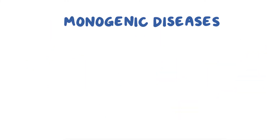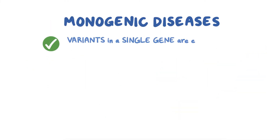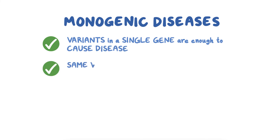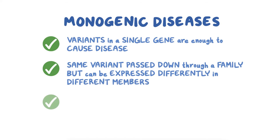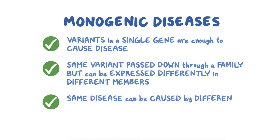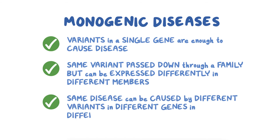So for monogenic diseases, variants in a single gene are enough to cause disease; the same variant gets passed down through a family but can be expressed differently in different members; and the same disease can be caused by different variants in different genes in different families.